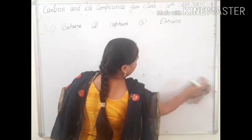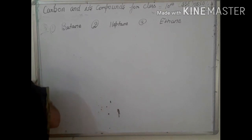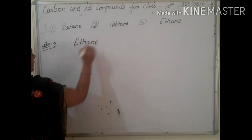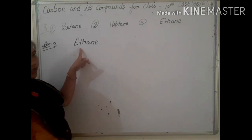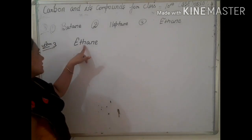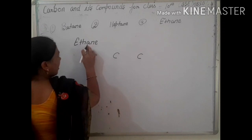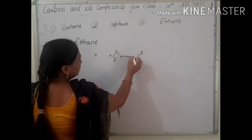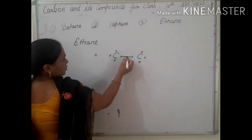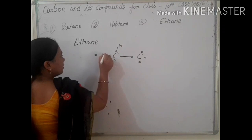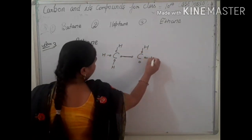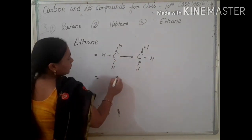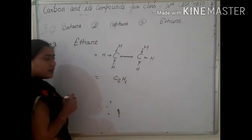Next is ethane. 'Eth' means two carbon atoms are present, and '-ane' means single bonds. Each carbon atom has four electrons; one electron from each carbon is used to form the C-C single bond, and the remaining electrons bond with hydrogen to complete the valency. The molecular formula is C2H6.